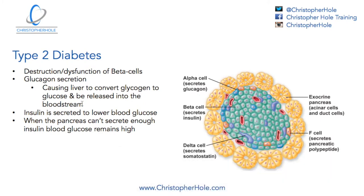It's as if the alpha cells are increasingly active, causing the liver to create a lot of glucose from glycogen and putting it into the bloodstream. What this then does is trigger the beta cells, which produce insulin, to pick that up.